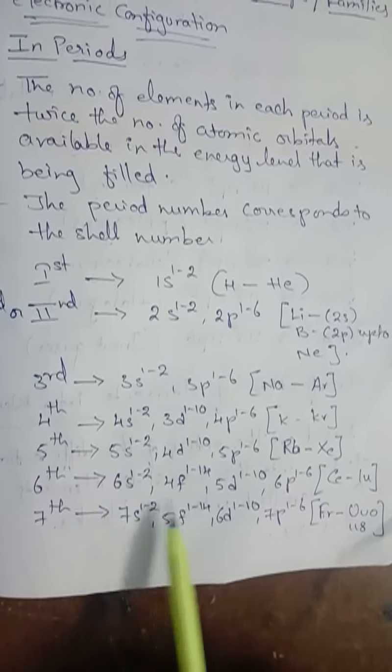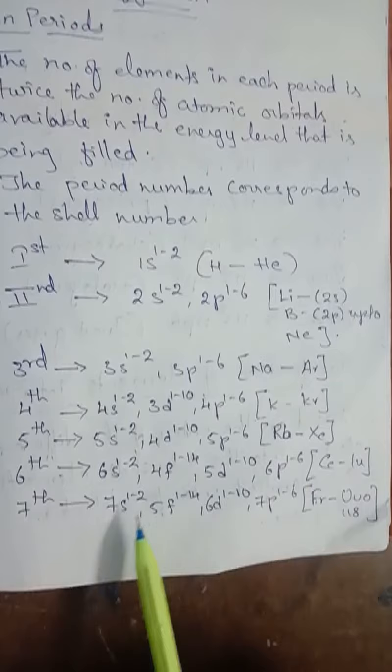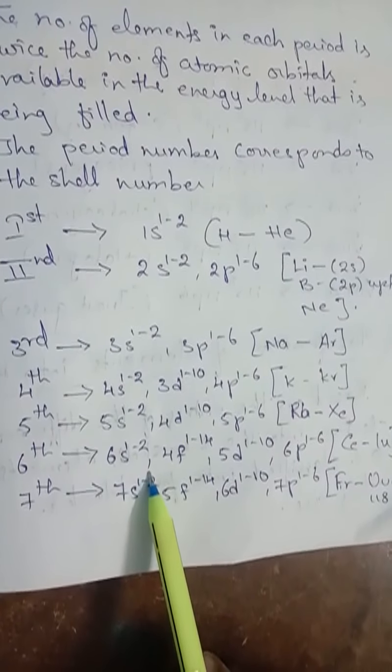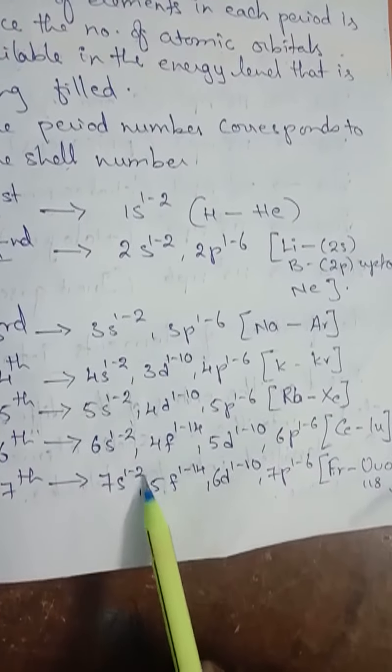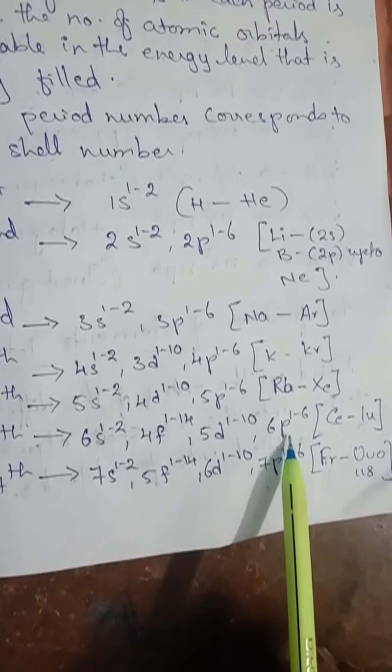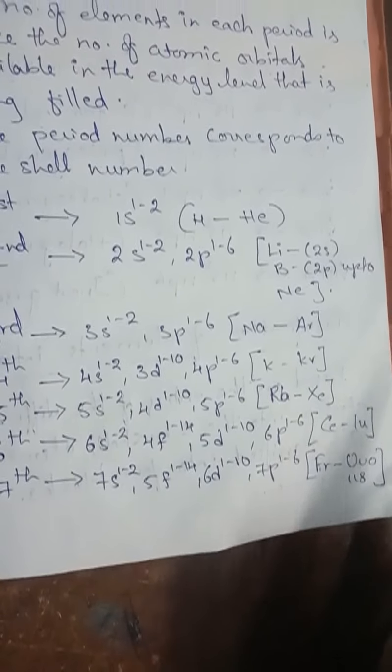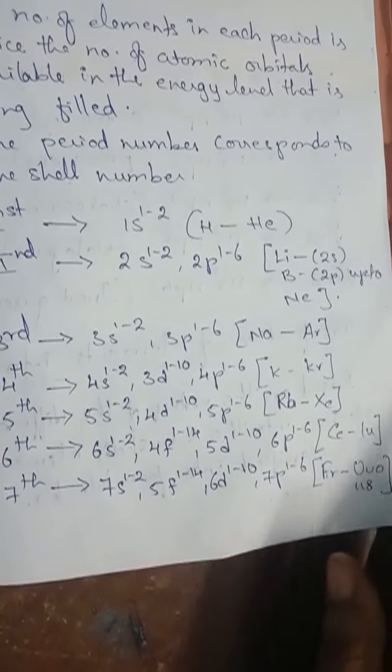The sixth period starts with caesium, and the electronic configuration is 6s1-2, 4f1-14, 5d1-10, 6p1-6. This sixth period has 32 elements, and electrons are filled successively in 6s, 4f, 5d, and 6p orbitals. Filling up of 4f orbitals begins with cerium and ends with lutetium, giving the 4f series, also called the lanthanide series, which is present in the sixth period.